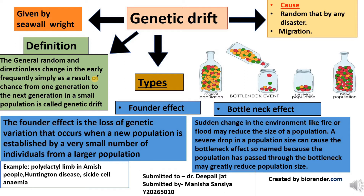Chance events can also cause allele frequency to fluctuate unpredictably from one generation to the next, especially in a small population, and this process is called genetic drift.